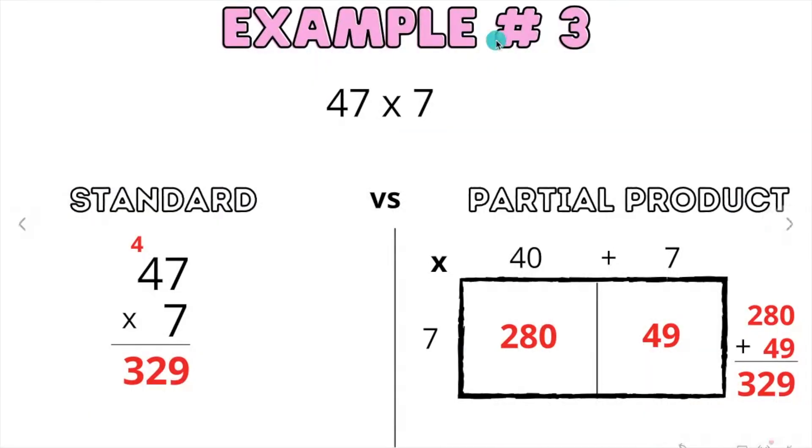Example number 3. 47 times 7. We multiply the ones. 7 times 7 is 49. We put the 9 at the bottom. We carry the 4. 7 times 4 is 28. And we add the 4. So 28 plus 4 is 32. So our answer is 329.